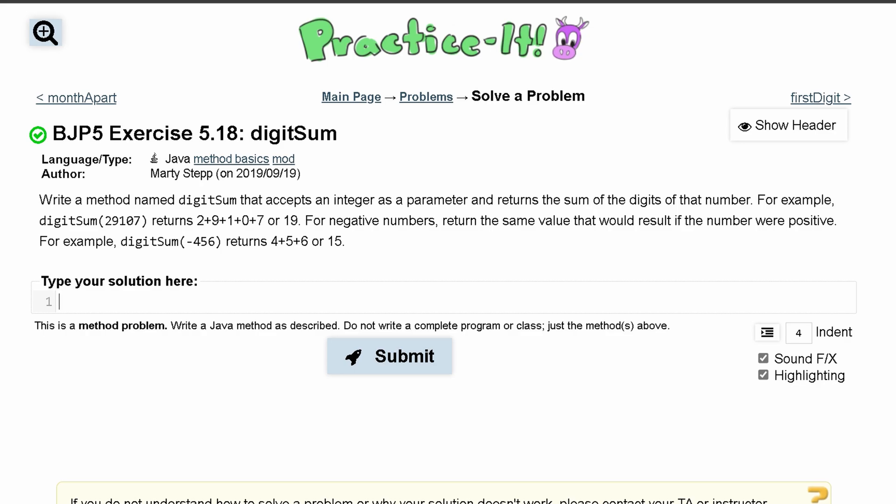For practice exercise 5.18, digitSum, we want to write a method named digitSum that accepts an integer as a parameter and returns the sum of the digits of that number. For example, it's going to add all these together and return it. We also have to handle negative numbers but omit the negative part.